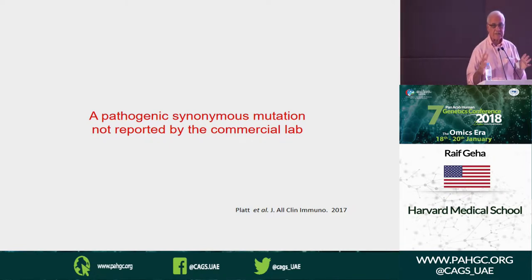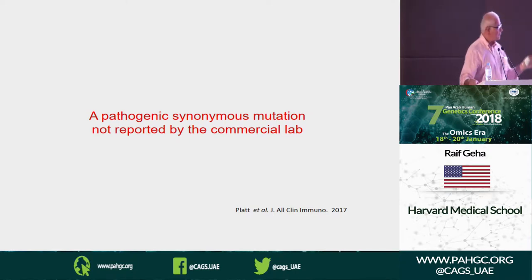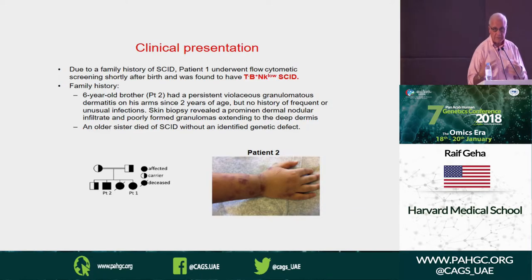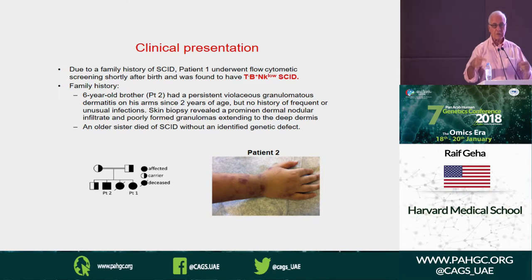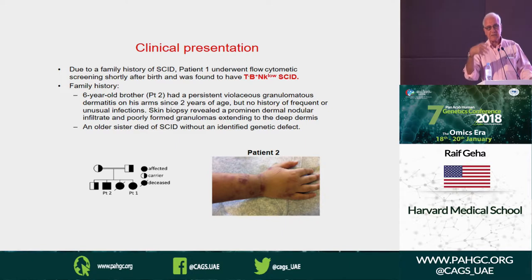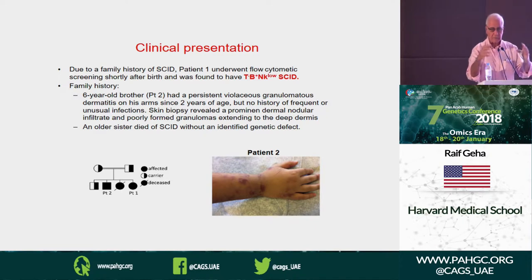I'm going to illustrate the lessons we have learned. The first is a pathogenic synonymous mutation that was not reported by the commercial lab. This patient came from King Faisal Hospital in Saudi Arabia. She had lost a sister with severe combined immunodeficiency — SCID — which is a very severe form of immunodeficiency starting very early in life, usually killing in the first year. You have problems with T cells, so you get viruses and fungus, and problems with B cells, so you get bacteria.